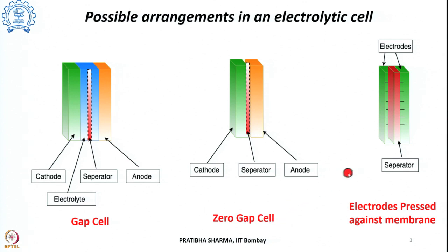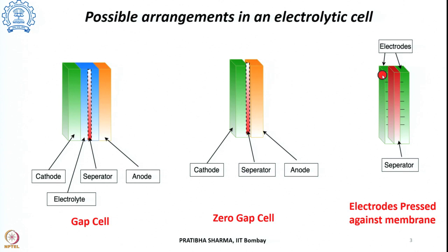There is a third concept primarily for polymer electrolyte membrane-based electrolyzers, where the separator is a membrane that selectively allows ions to pass through. This membrane has electrocatalytic porous layers on both of its surfaces and is pressed across the current collectors. In this arrangement, higher current densities and higher efficiencies can be achieved.